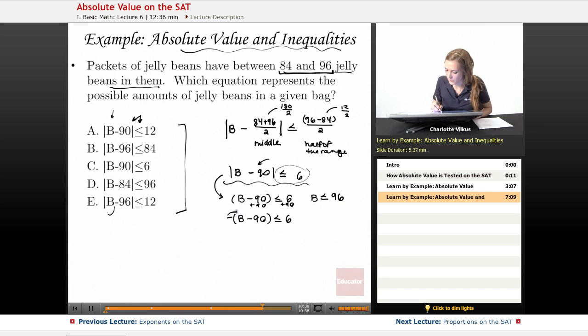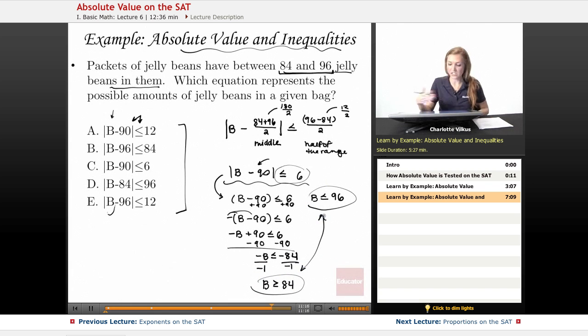For this one I have to multiply out the negative one, so negative b plus 90 is less than or equal to 6. Here I can subtract 90 from both sides and I'm going to get that negative b is less than or equal to negative 84. And then when I divide both sides by negative one to get just b, I'm going to have to flip the sign so I get b is greater than or equal to 84. And when I look at this, this is in fact my two bounds. I have that b is between these two numbers.